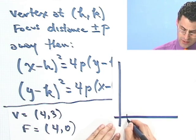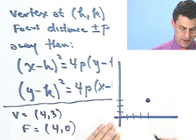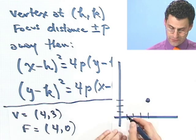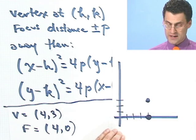So what do we got going on here? The vertex is at (4,3). So there's the vertex, and the focus is at (4,0). So in fact, there is the focus.